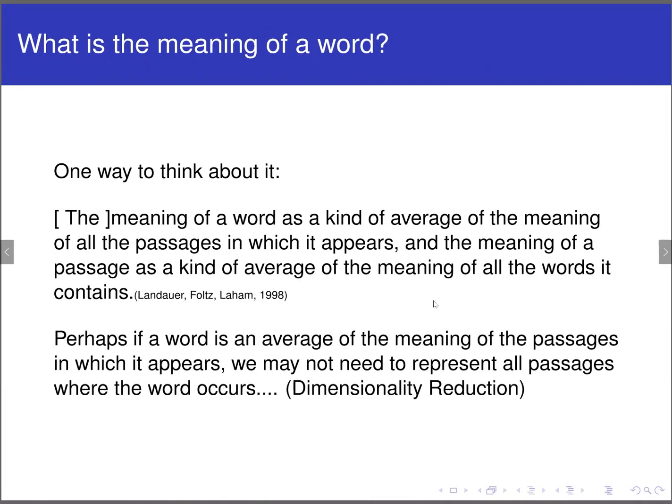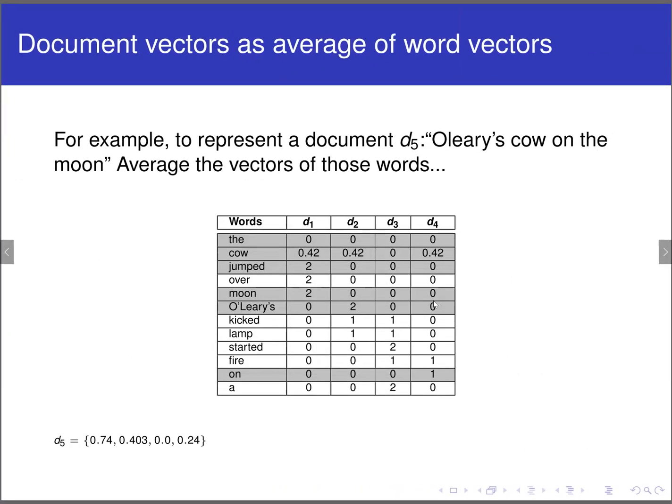If you're still wondering about these coefficients, they come from a process called TF-IDF, which is also treated in a different video. Now, another way of thinking about this is that now that we can have a word-by-document matrix, what is in a word? What's the meaning of a word? One can think, for example, the meaning of a word is an average of the meaning of all passages in which they appear, which is very similar to what we've been doing for document similarity. But also, the meaning of a document or a passage is the average meaning of the words that it contains. And we're going to deal with that intuition. So, for example, if we have a new document, D5, O'Leary's cow on the moon, we just look at the words.